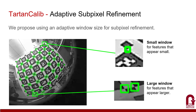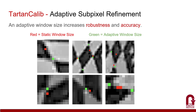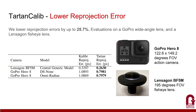In this figure, the red dots show how a static window size can lead to inaccurate detections, whereas our proposed adaptive subpixel refinement, shown by the green dots, converges to the feature. We also evaluate reprojection error and show that using the fisheye lens and wide-angle GoPro action camera, we improve reprojection error by up to 25.7%.